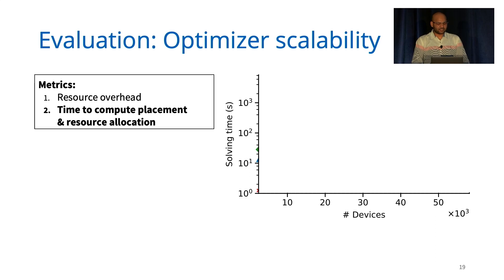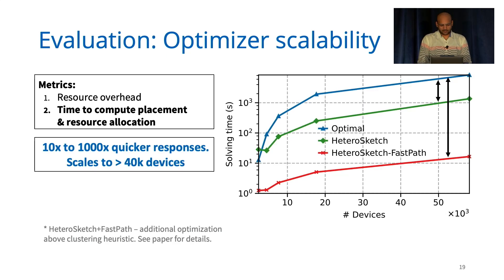Next, we study the scalability of our approach. For that, as shown in the figure, we measure the response time as we vary the size of our topology. We find that our approach allows us to provide one to three orders of magnitude quicker responses for network dynamics, allowing us to scale to topologies with more than 40,000 devices.